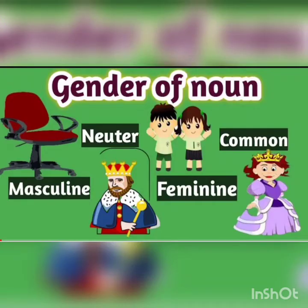We have four genders. They are feminine gender, masculine gender, neuter gender, and common gender. Let us watch a short video. I want you to watch the video nicely and listen carefully.